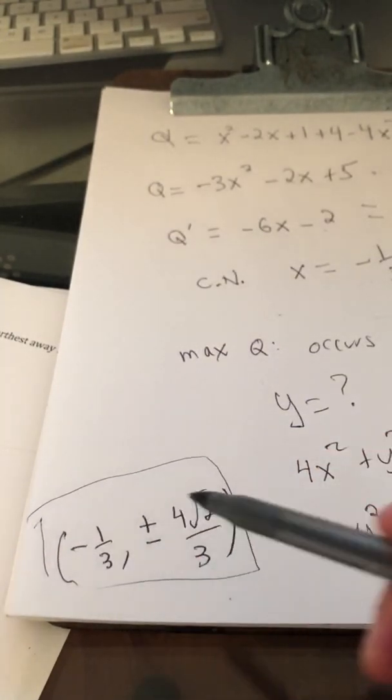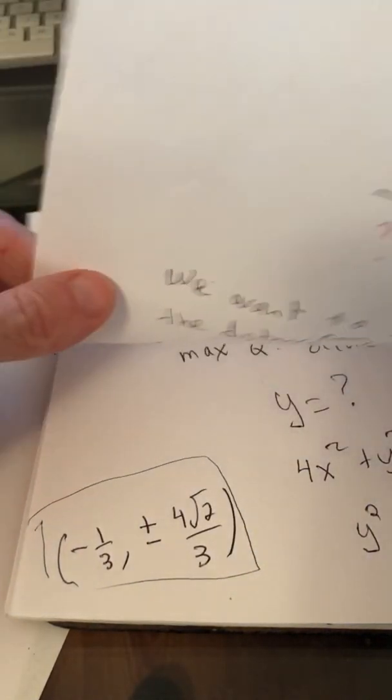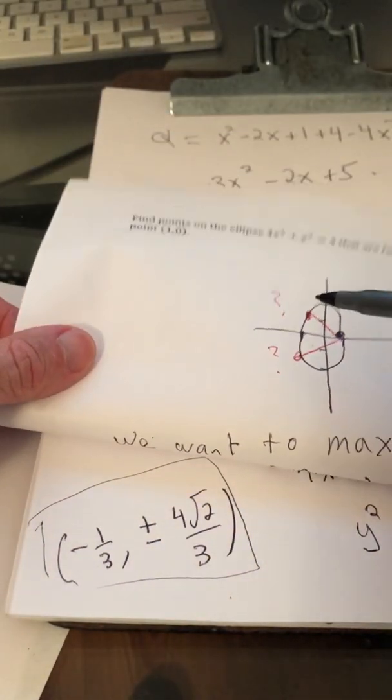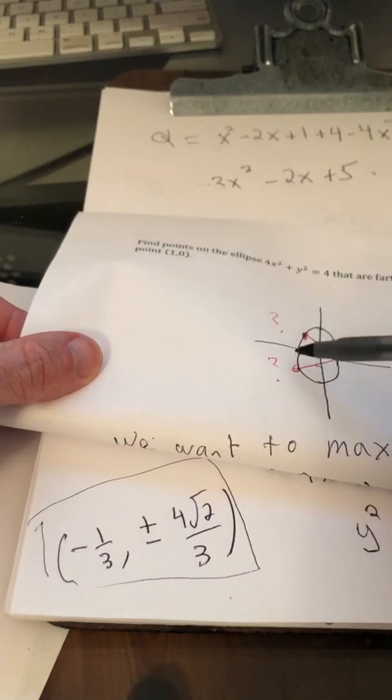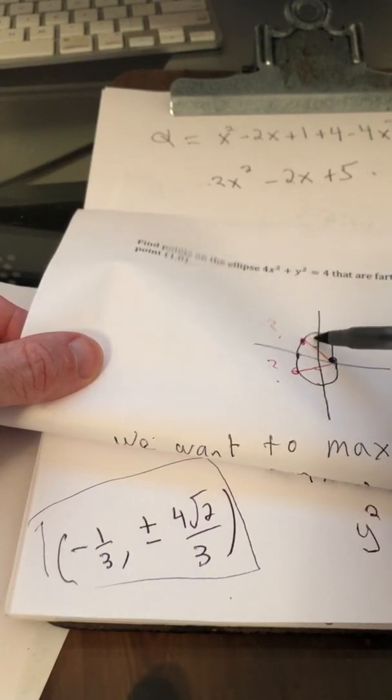So again, we have some symmetry in this problem. So we actually found the exact value of these two ordered pairs.